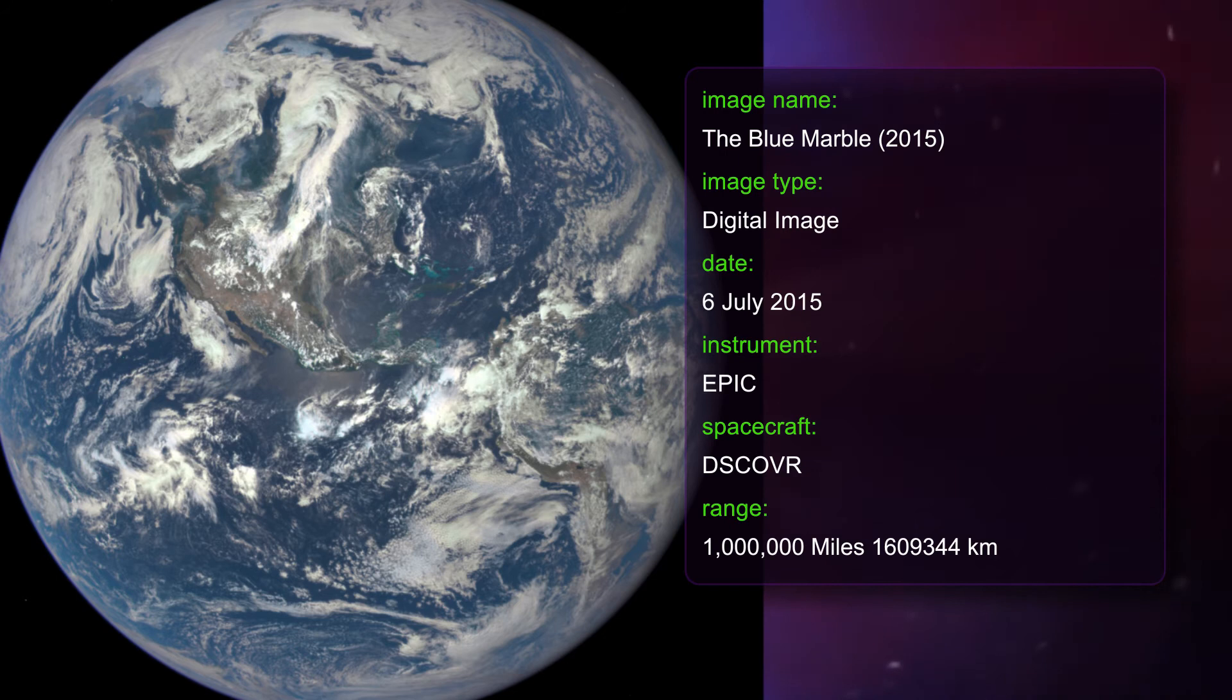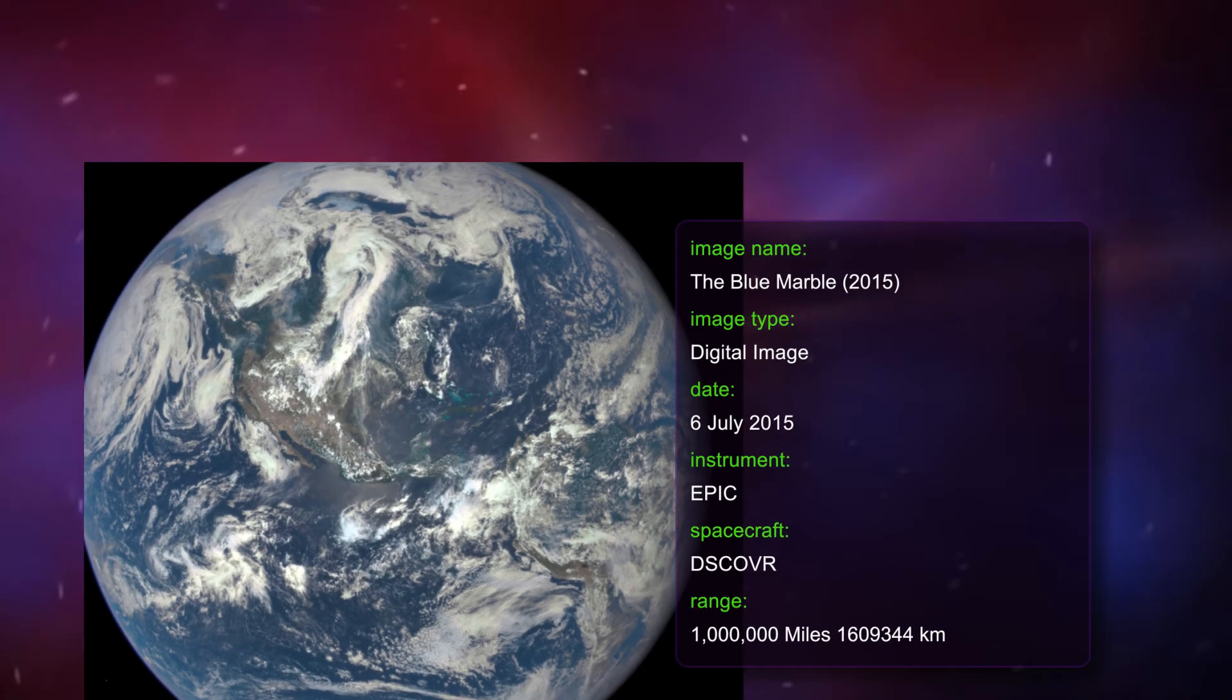The camera takes a series of 10 images using different narrowband filters from ultraviolet to near-infrared to produce a variety of science products. The red, green and blue channel images are then combined to create a new photographic quality image every two hours.